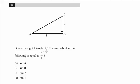Given the right triangle ABC above, which of the following is equal to b over a? And we have some trig terms in the answer choices.